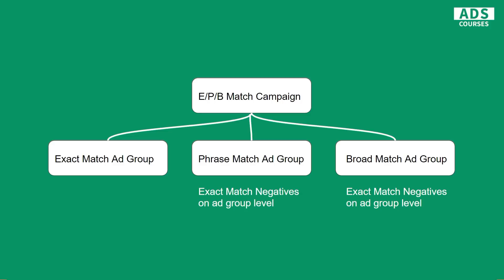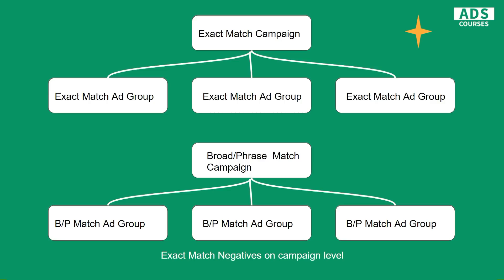The fact that you have to add negatives at the ad group level may be a little problematic. That's why I like this second strategy more. Here you split your match types for the same keywords into separate campaigns: an exact match campaign with exact match ad groups, and a broad and phrase match campaign with broad and phrase match ad groups. You simply place exact match negatives at the campaign level, which makes it way faster and easier to optimize and keep control over exact match keywords.